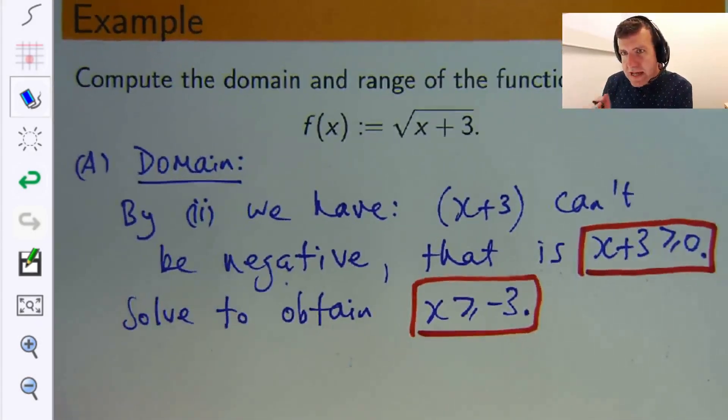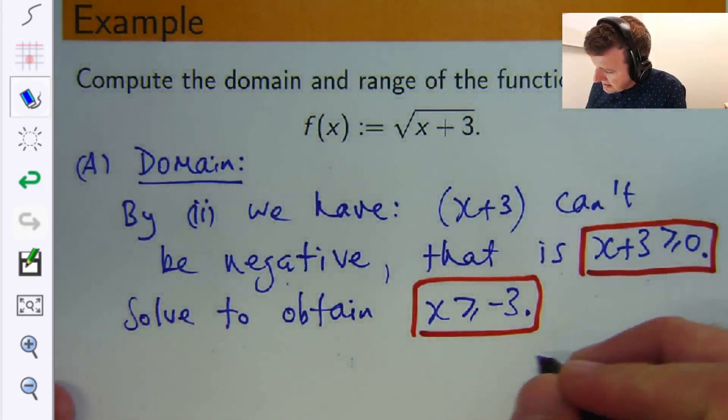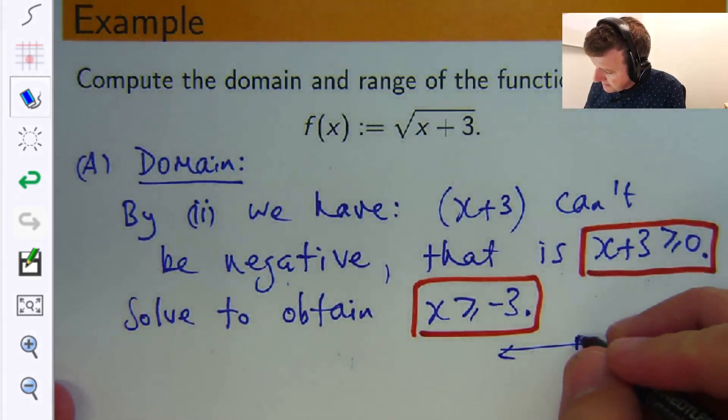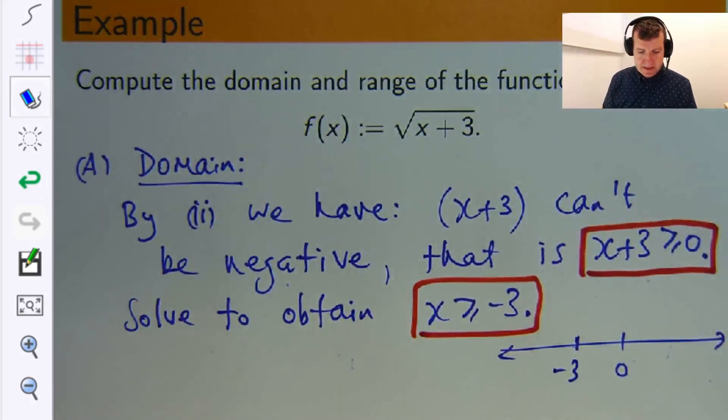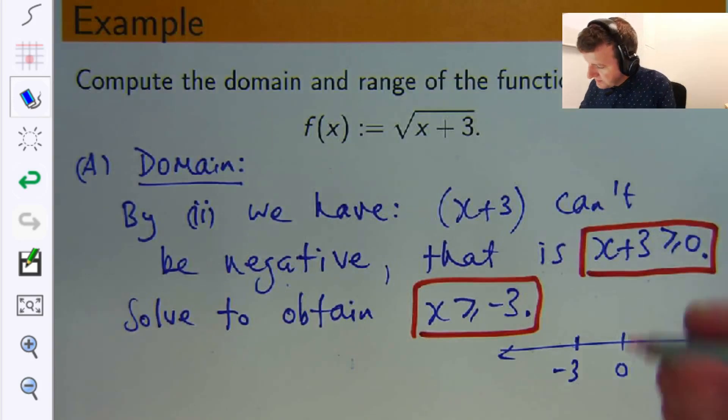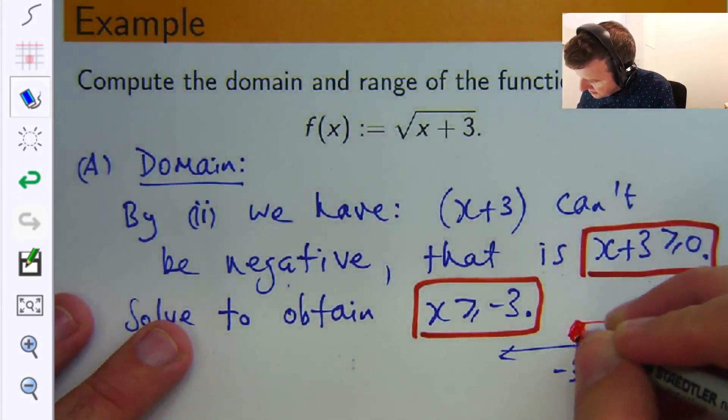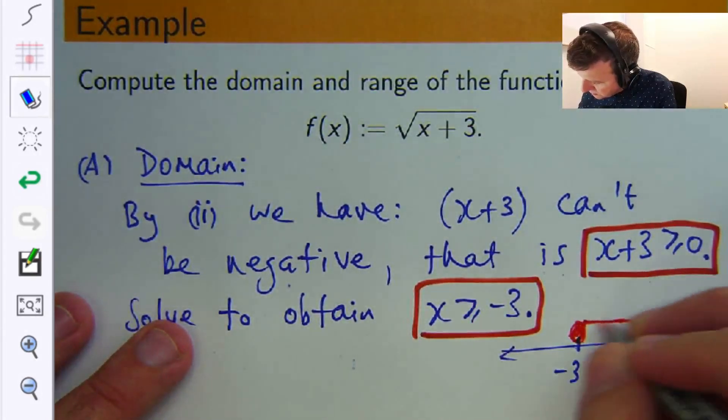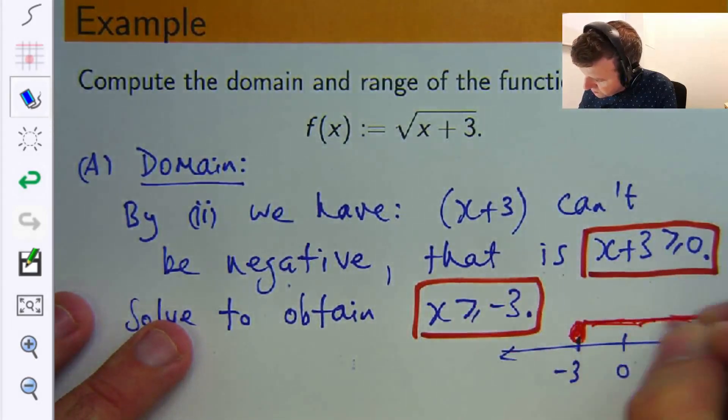So let's write that now as an interval. So on the number line, let's say this is the x axis. x greater than or equal to negative three, that is these sets of points. Now I'm coloring this dot because I've got greater than or equal to, so x could be equal to negative three. If this was strictly greater than, I'd have an open dot here, or open circle.